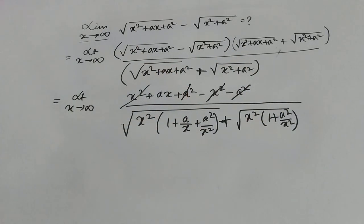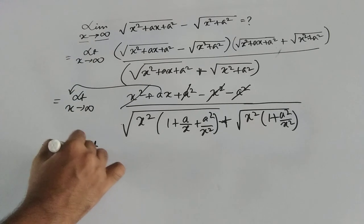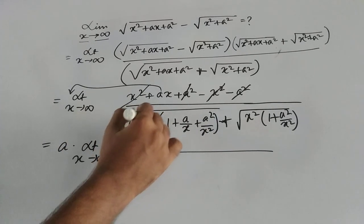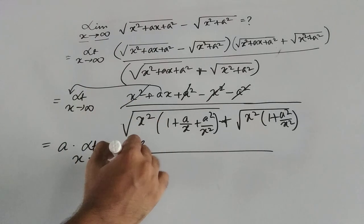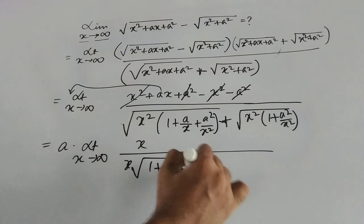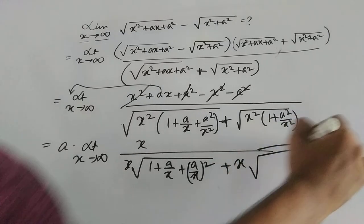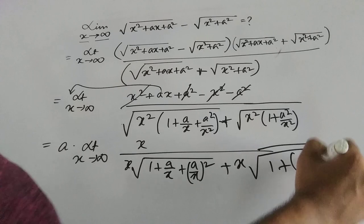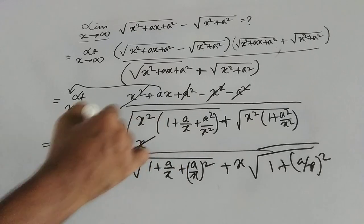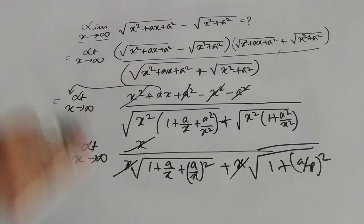In the numerator, 'a' is a constant which can come out of the limit, so it becomes a times limit x tends to infinity of x divided by: x comes out of the square roots in the denominator, giving x times square root of (1 + a/x + a/x²) plus x times square root of (1 + a/x)². Taking x common from numerator and denominator, the x's cancel.